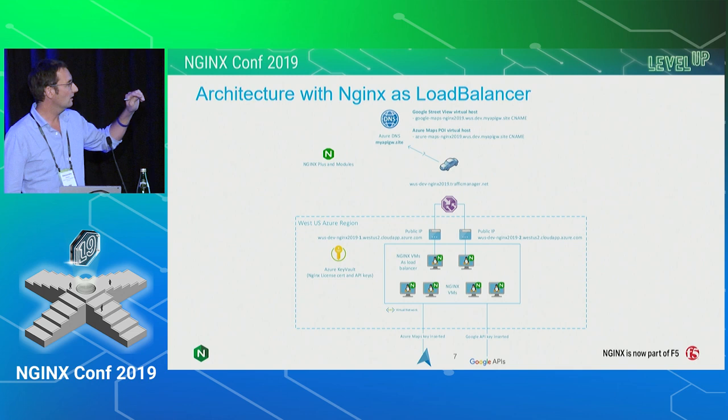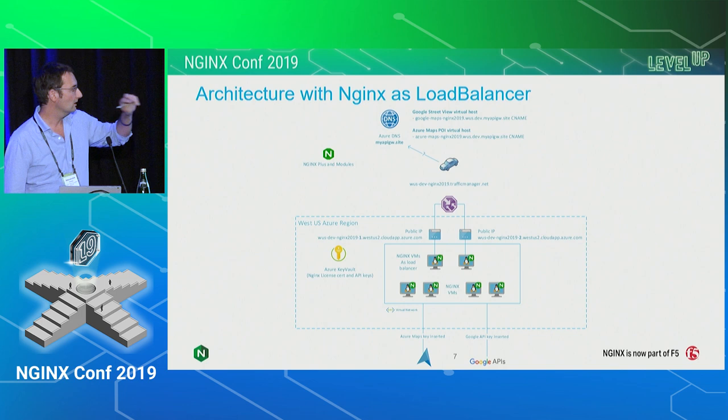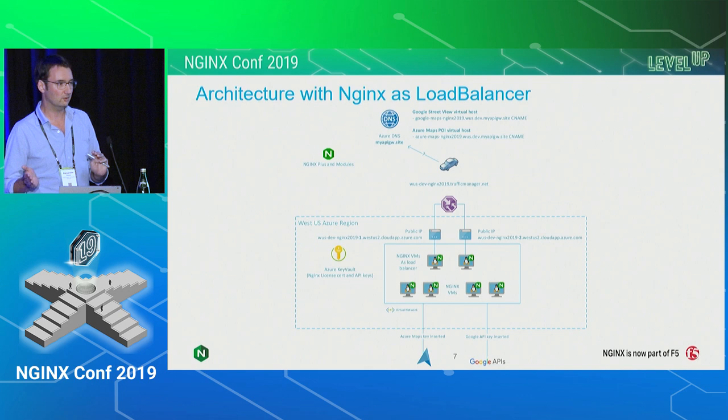You could have two Nginx servers at the top with two public IPs, and use Traffic Manager — a component that helps you direct traffic to one instance or the other, or do some AB testing. For example, you can say: I want 90% on the left and 10% on the right. That's how it could be used.